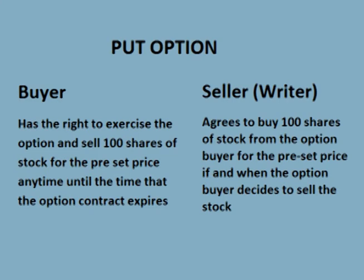To protect his position, he buys a put option that expires in one month as an insurance policy. This put option allows him to sell the stock for $18 anytime between the time the option was purchased and the time the option expires a month later, no matter what the price of the stock is at that time. He pays 33 cents per share to do this, for a total cost of $33, plus commissions.